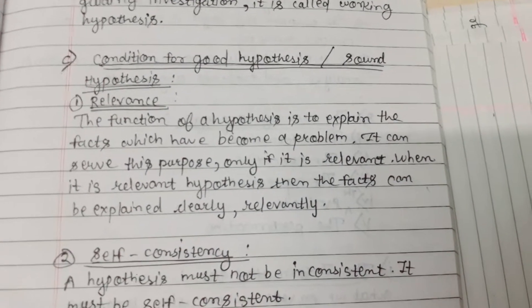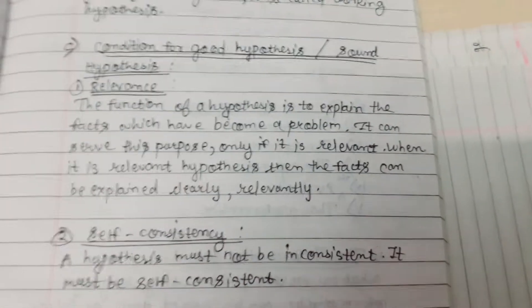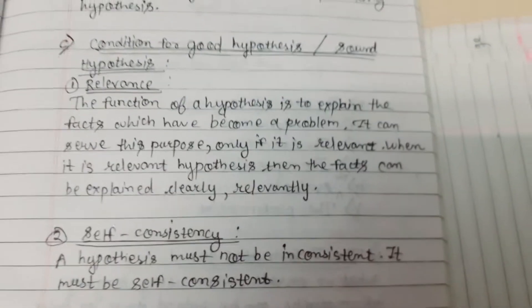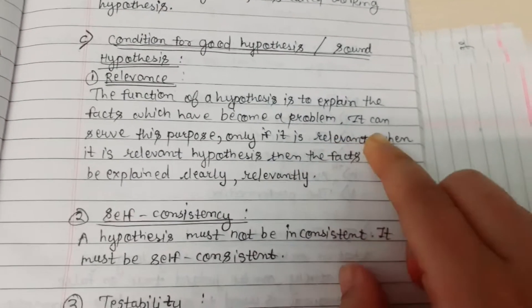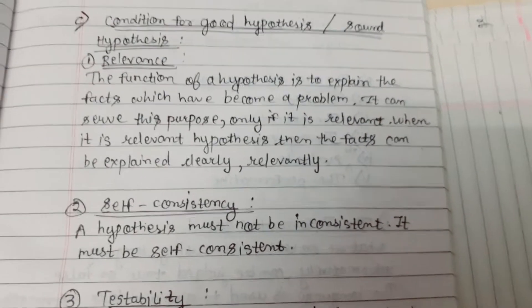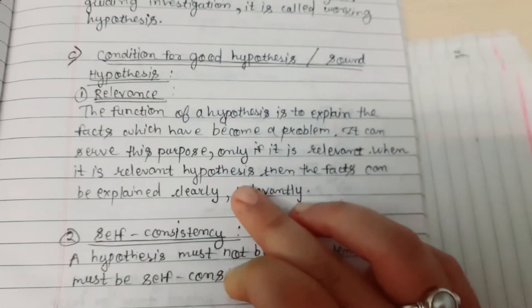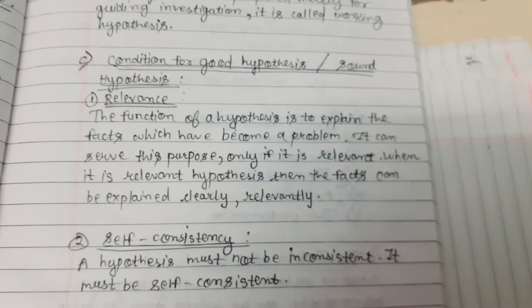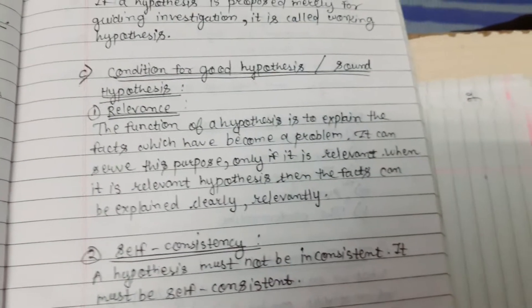Conditions for a Good Hypothesis or Sound Hypothesis. Condition 1: Relevance. The function of a hypothesis is to explain the facts which have become a problem. It can serve this purpose only if it is relevant. When the hypothesis is relevant, then the facts can be explained clearly and relevantly. So relevance is a condition.